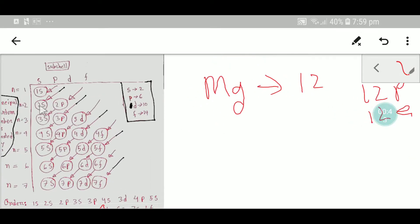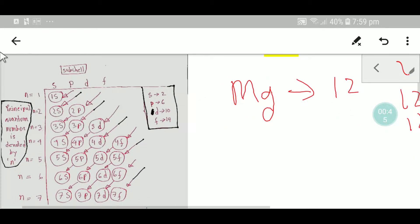By using this diagram we can easily do the electronic configuration of magnesium. You know that S sub-shell can take maximum 2 electrons, P can take maximum 6 electrons, D can take maximum 10, and F can take maximum 14.